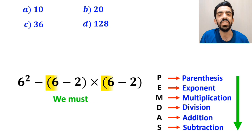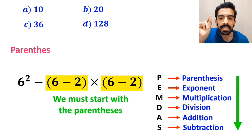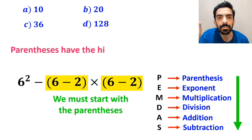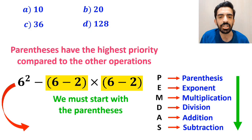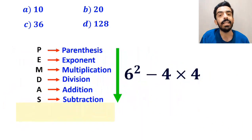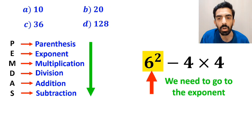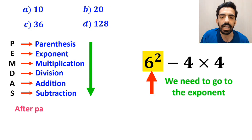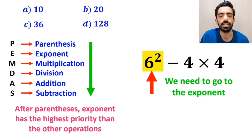We start with the parentheses first, because according to the PEMDAS rule, parentheses have the highest priority. So instead of the original expression, we write 6 squared minus 4, multiplied by 4. In the next step, we go to the exponent, because after parentheses, exponents have the next highest priority.